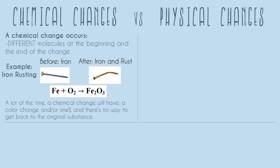So in this example, we do have a color change. Rust has that orangey color, which is different from iron, and there's a slight smell — not a huge one.